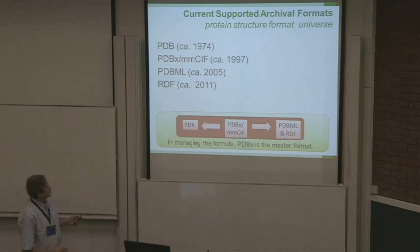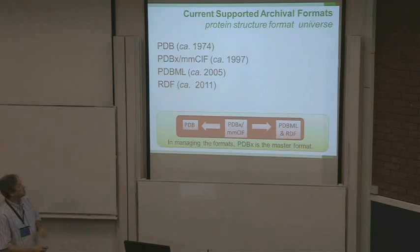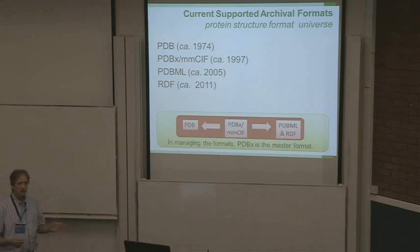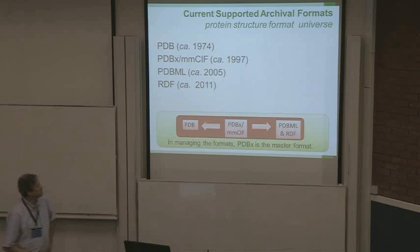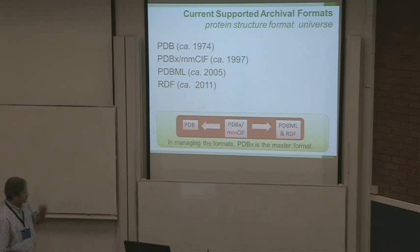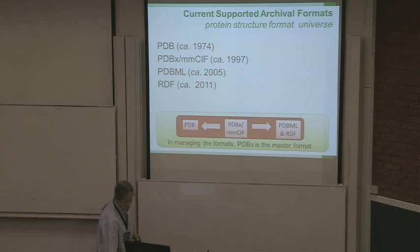The PDB format was the original format used by the archive dating back to the early 1970s — it's a record-oriented format. The CIF format began to be used in the archive around 1997. These dates represent when all the structure data in the archive was distributed in each format. The XML version, which we call PDBML, became available in 2005, and the RDF implementation in 2011. The way these files are produced is basically using the MMSIF file as a master format and generating from that the other formats.